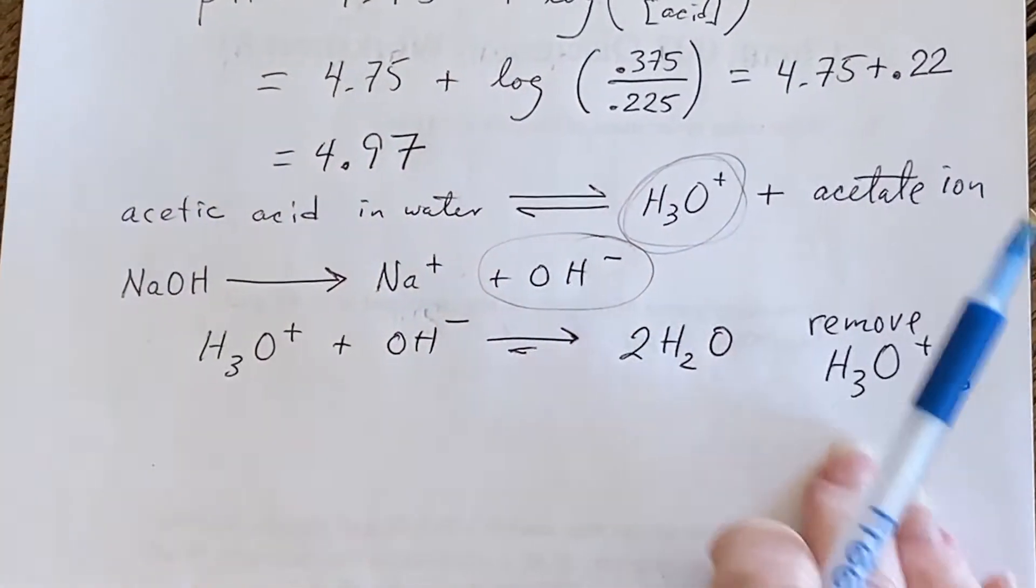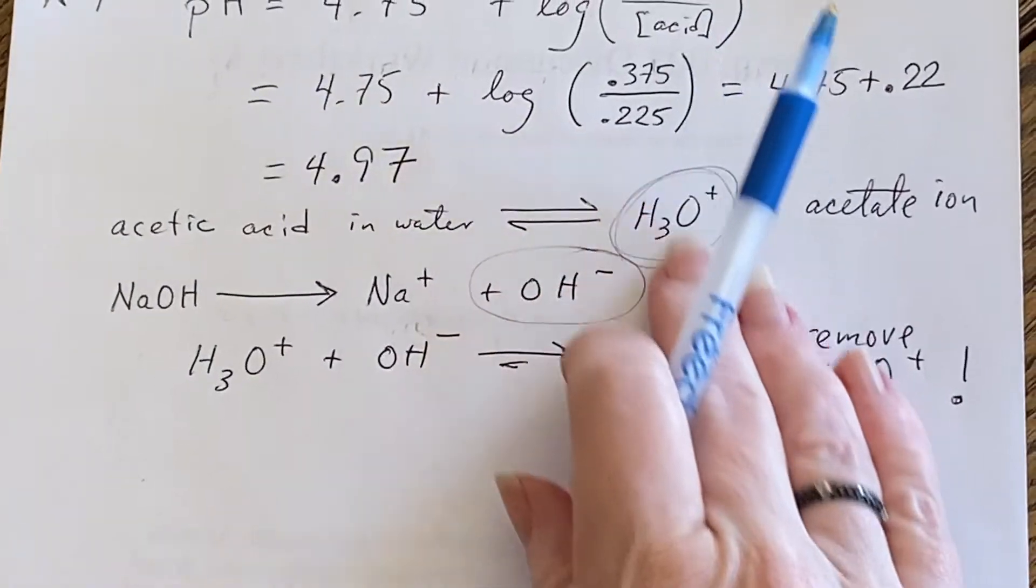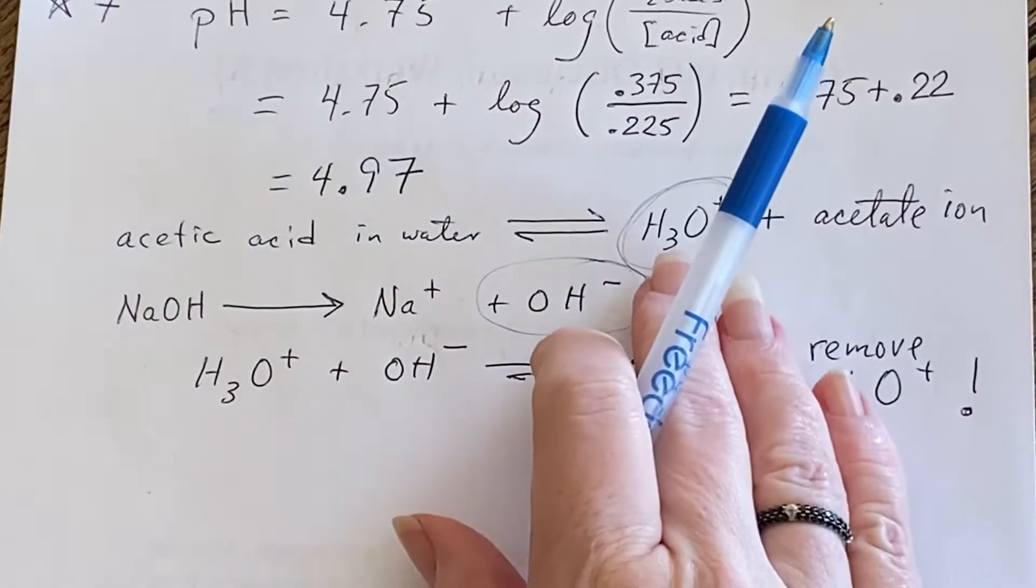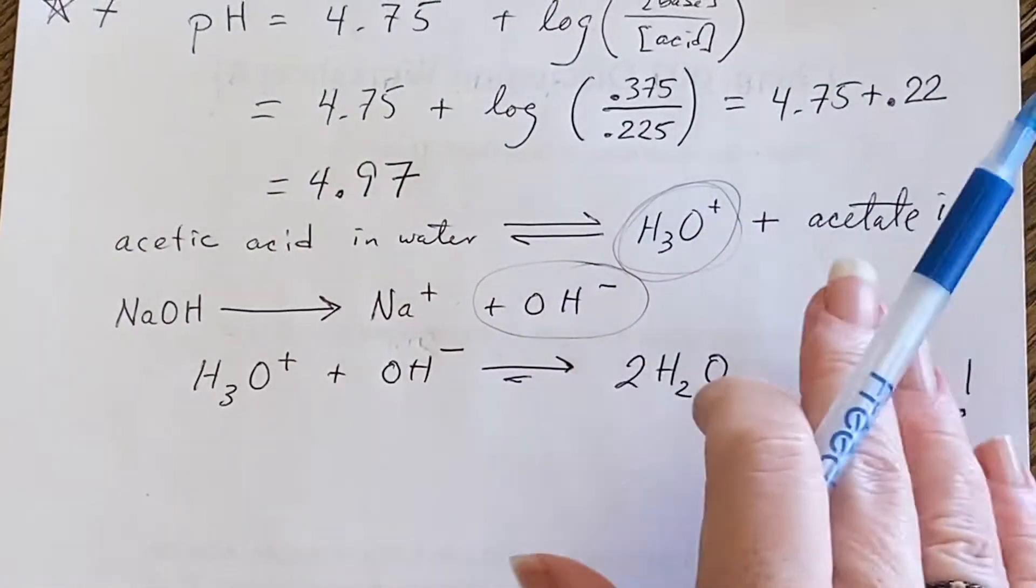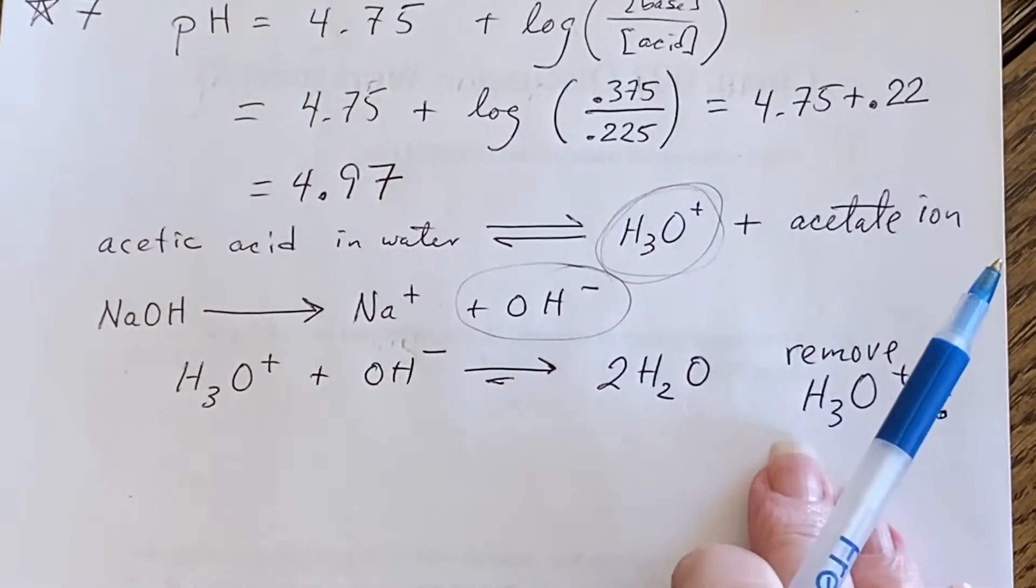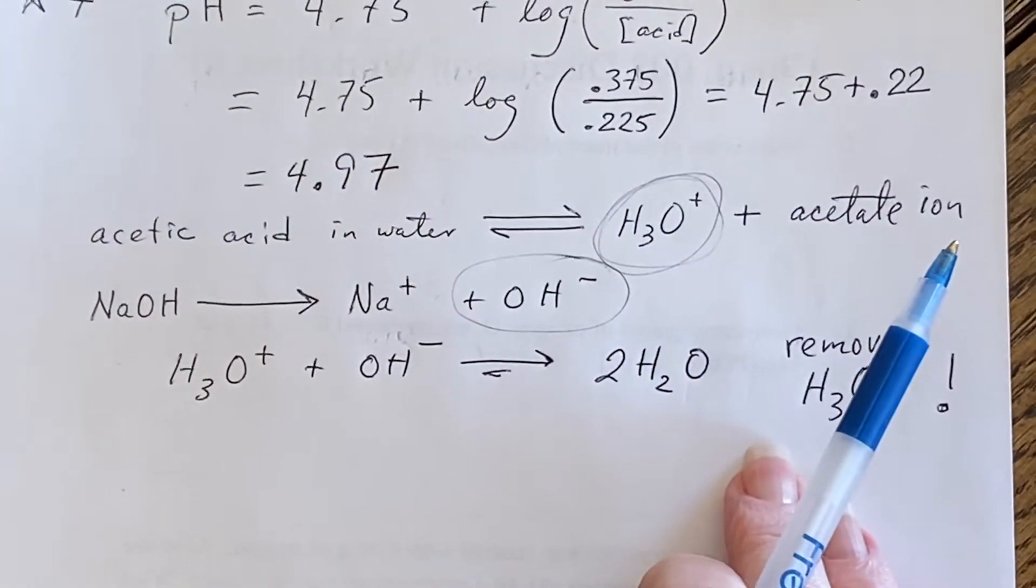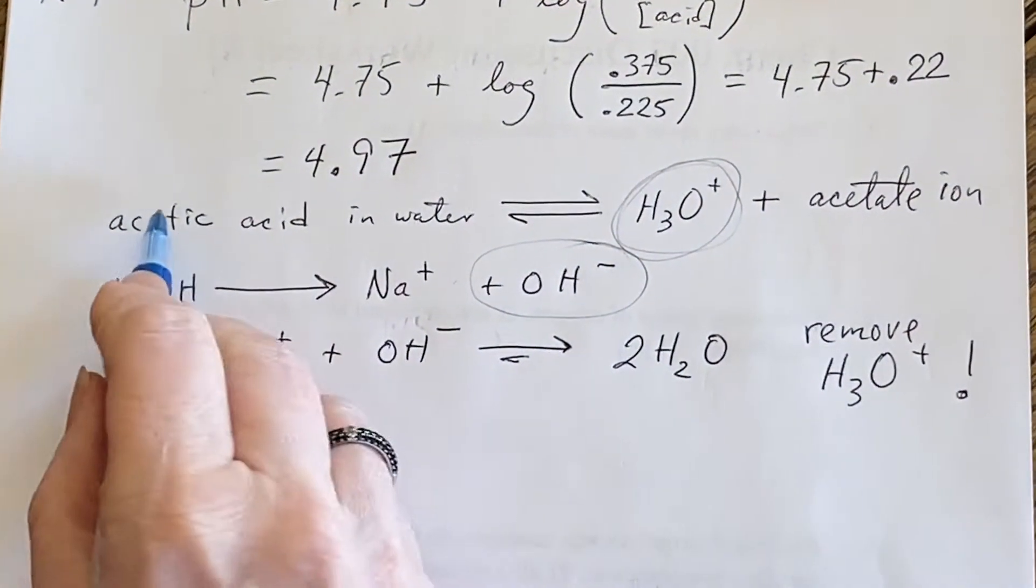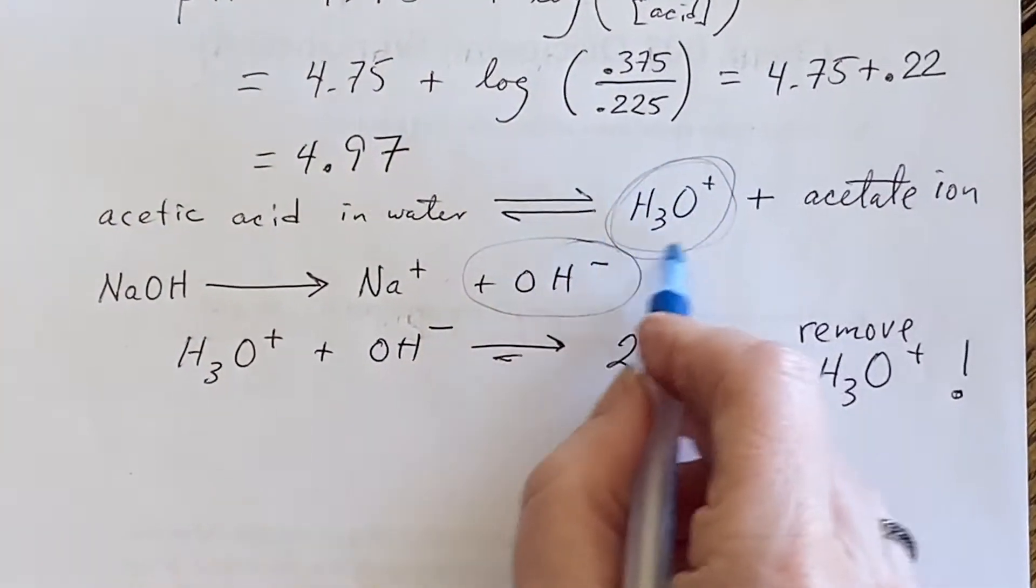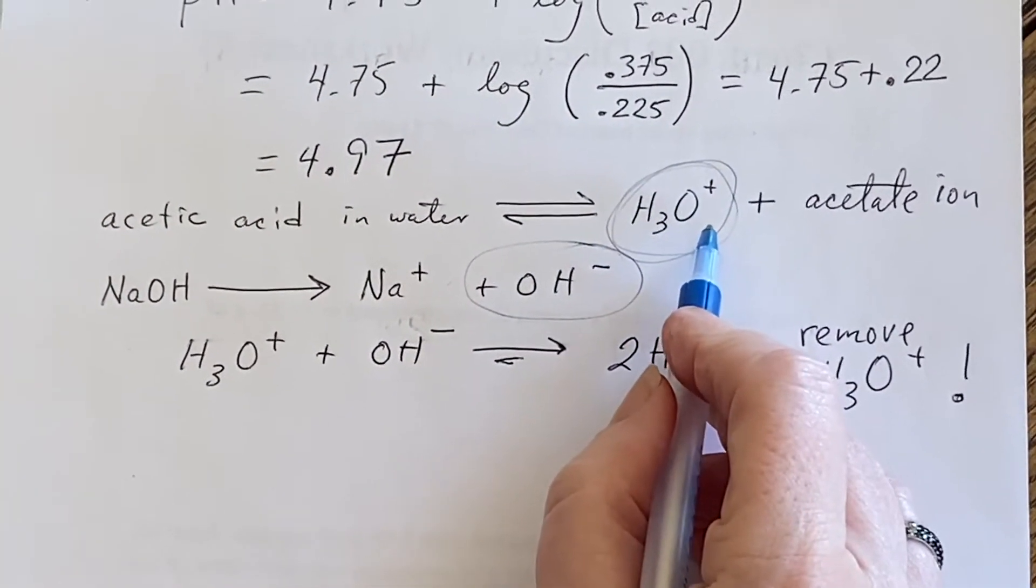And then Le Chatelier says, that's a change to the system. I'm going to react to that by saying, I don't want that number to go down. I am going to shift everything to the right to try to produce more of this because you're using it up.